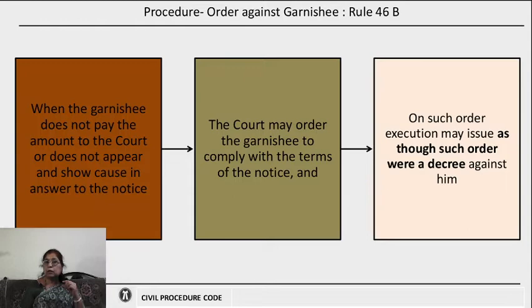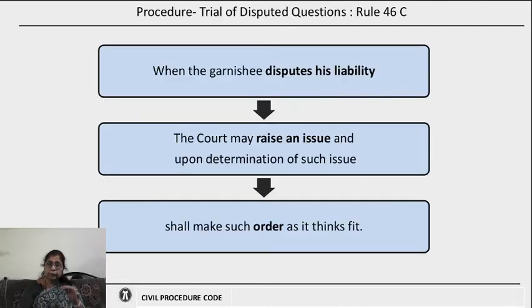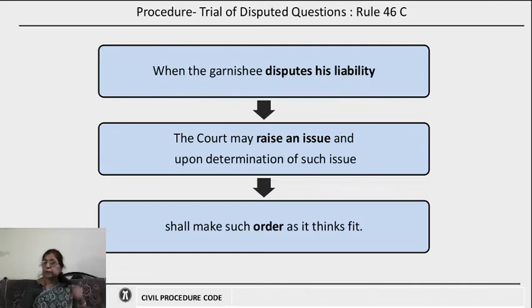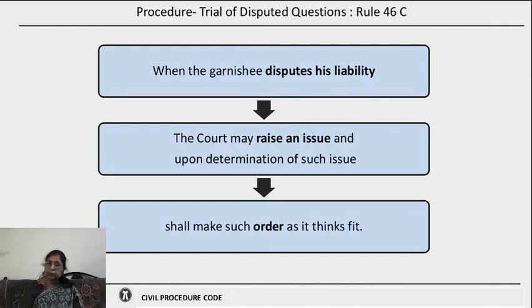This is a discretionary order or a discretionary remedy which can be asked from the court. The court has to see that it is a genuine debt, look into the matter, and decide whether the garnishee order should be issued or not. When the garnishee appears and disputes his liability, Rule 46C says the court may raise an issue and decide it as if it were a separate issue in a trial — determining whether the liability is genuine, whether he is in fact indebted to the judgment debtor, and what the circumstances are.